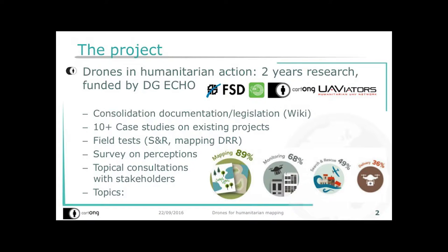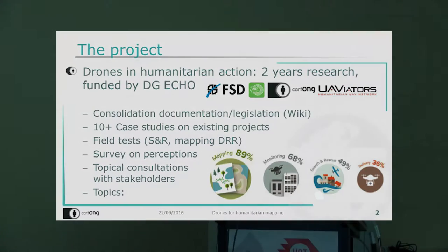This project has several aspects. The first was consolidating existing documentation on what UAVs can be used for in the humanitarian world. We also updated the UAVator Wiki, which provides information about regulations — if you're interested in flying drones in different countries, you should look there. We also produced more than 10 case studies on projects already implemented by different NGOs and UN agencies worldwide to find best practices.